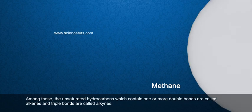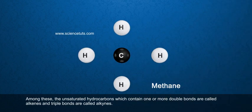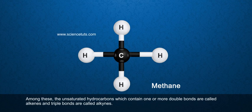Among these, the unsaturated hydrocarbons which contain one or more double bonds are called alkenes and triple bonds are called alkynes.